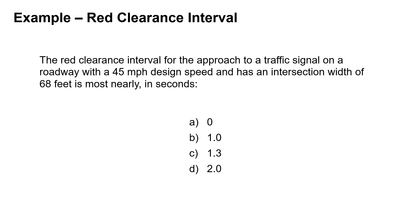So let's look at an example. We're asked to find this red clearance interval for the approach to a signal on a roadway with a 45 mile per hour design speed that has an intersection width of 68 feet.